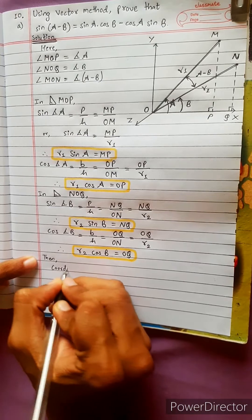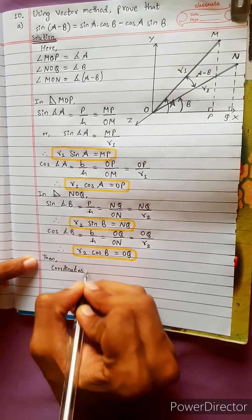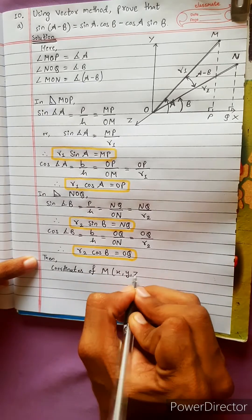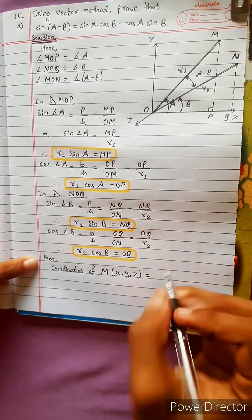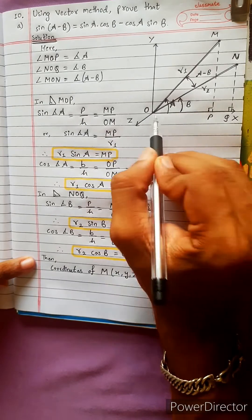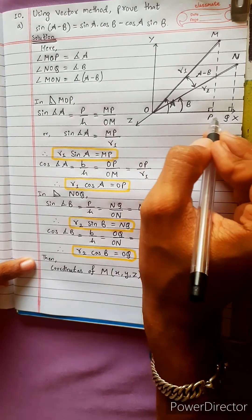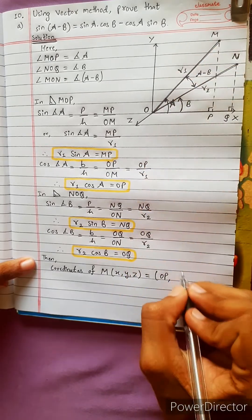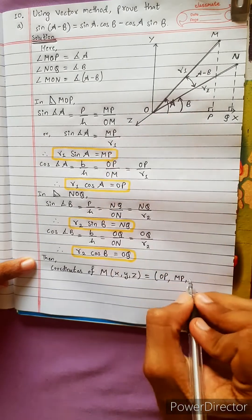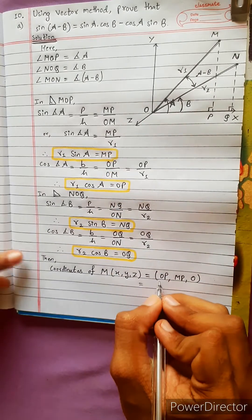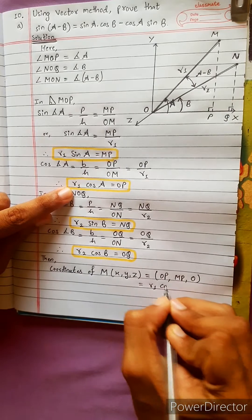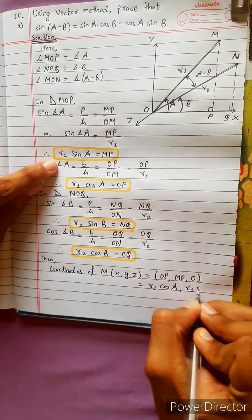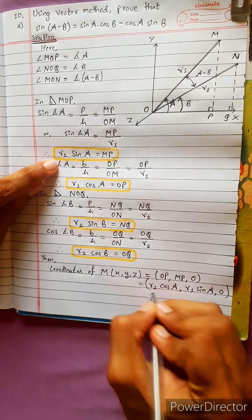Then, the coordinates of M: suppose M has coordinates. Along the x-axis the component is OP, along the y-axis it is MP. The position vector of M therefore equals (R1 cosA, R1 sinA, 0).